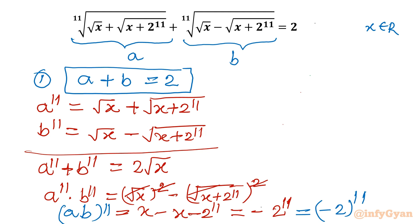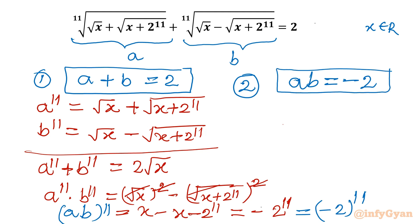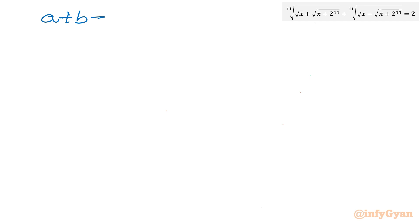Since the exponent is the same, the base must be equal. So the second equation is ab = −2. We have two important equations: a + b = 2 and ab = −2. We will target the value a^11 + b^11, find it out, and then equate that value equal to 2√x.